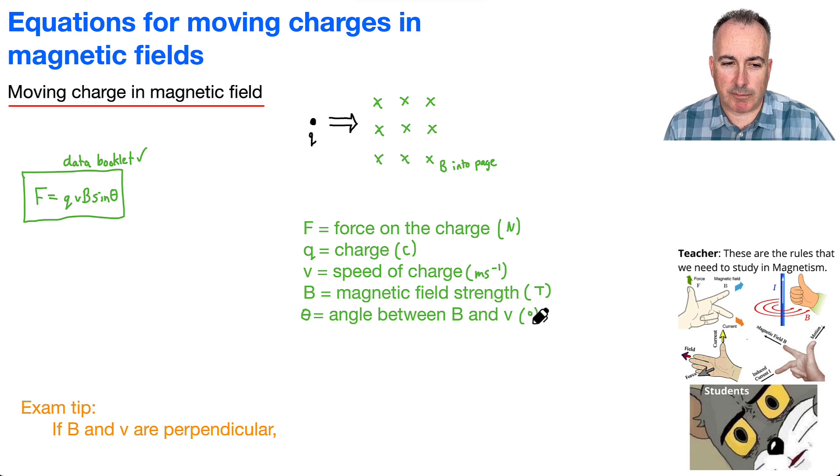Now, interestingly enough, though, what happens if B and V are perpendicular? What happens then? Well, then theta is just going to be 90 degrees. And if you remember from math, what is the sine of 90 degrees? Well, sine of 90 degrees is just one.